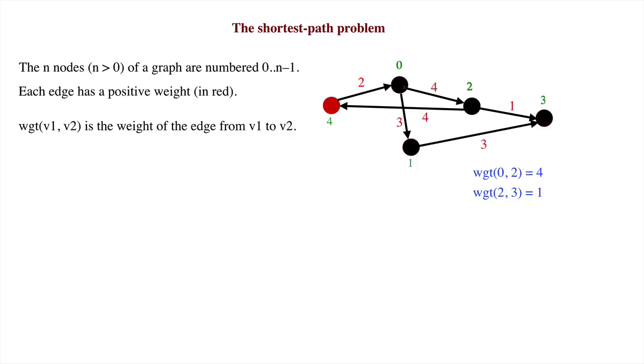For example, in the graph in the window, WGT of 0 comma 2 is 4, and the weight from 2 to 3 is 1.